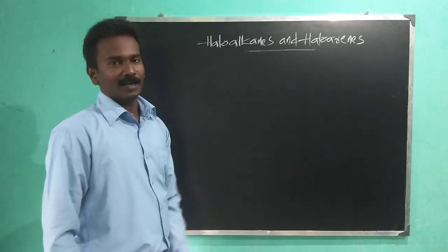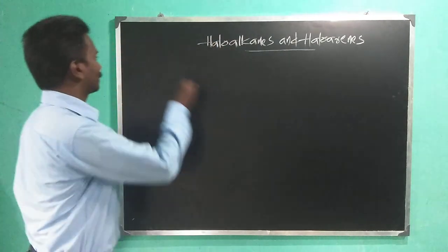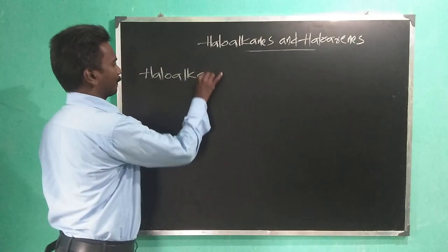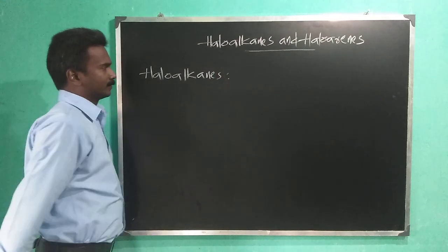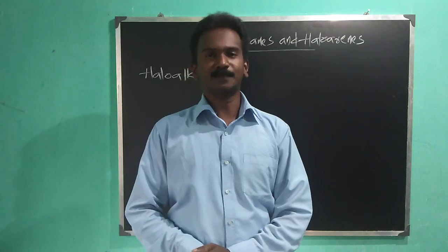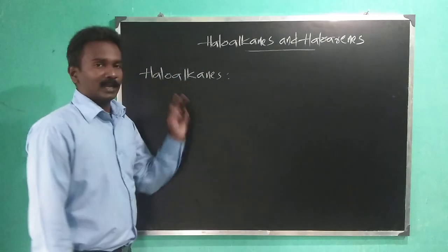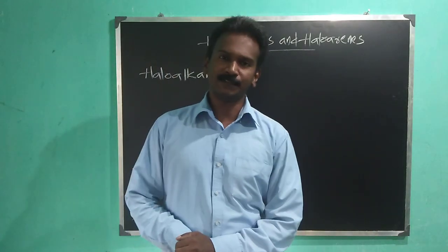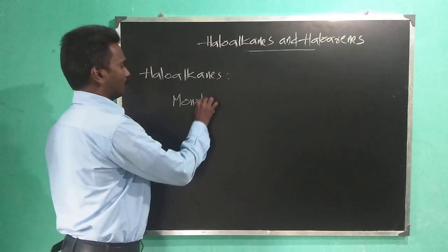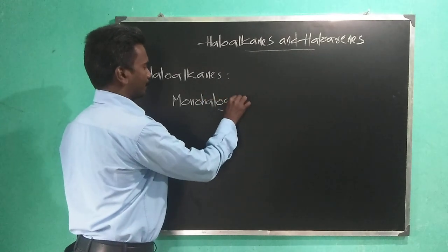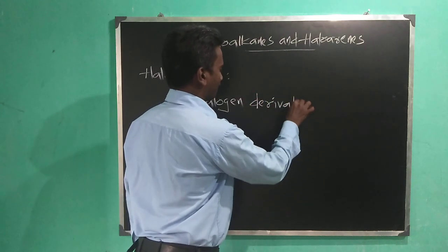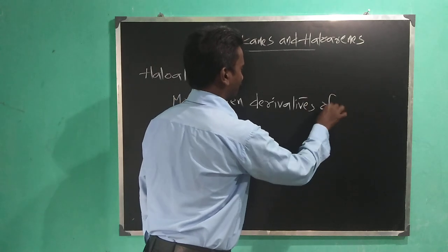Haloalkanes and Haloarenes. First, Haloalkanes. We will discuss what are Haloalkanes, what is the structure and some examples. Haloalkanes are the monohalogen derivatives of alkanes.